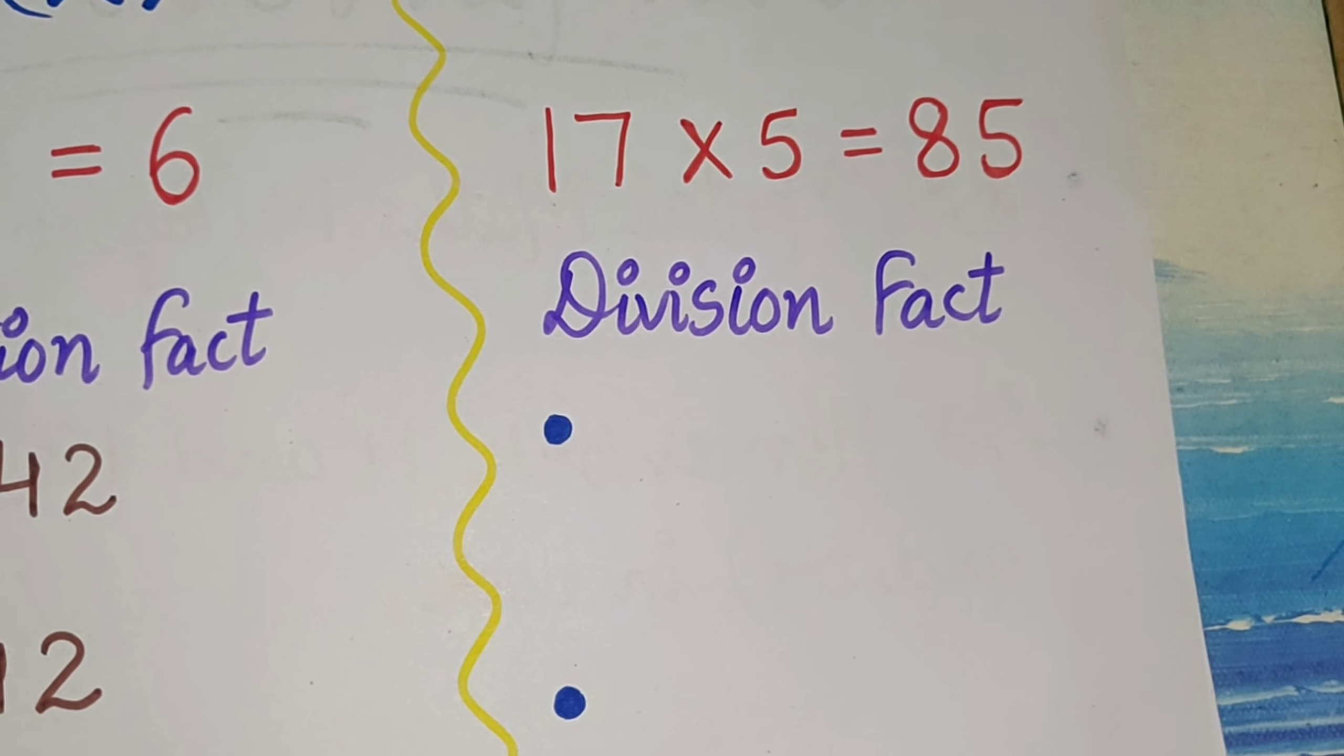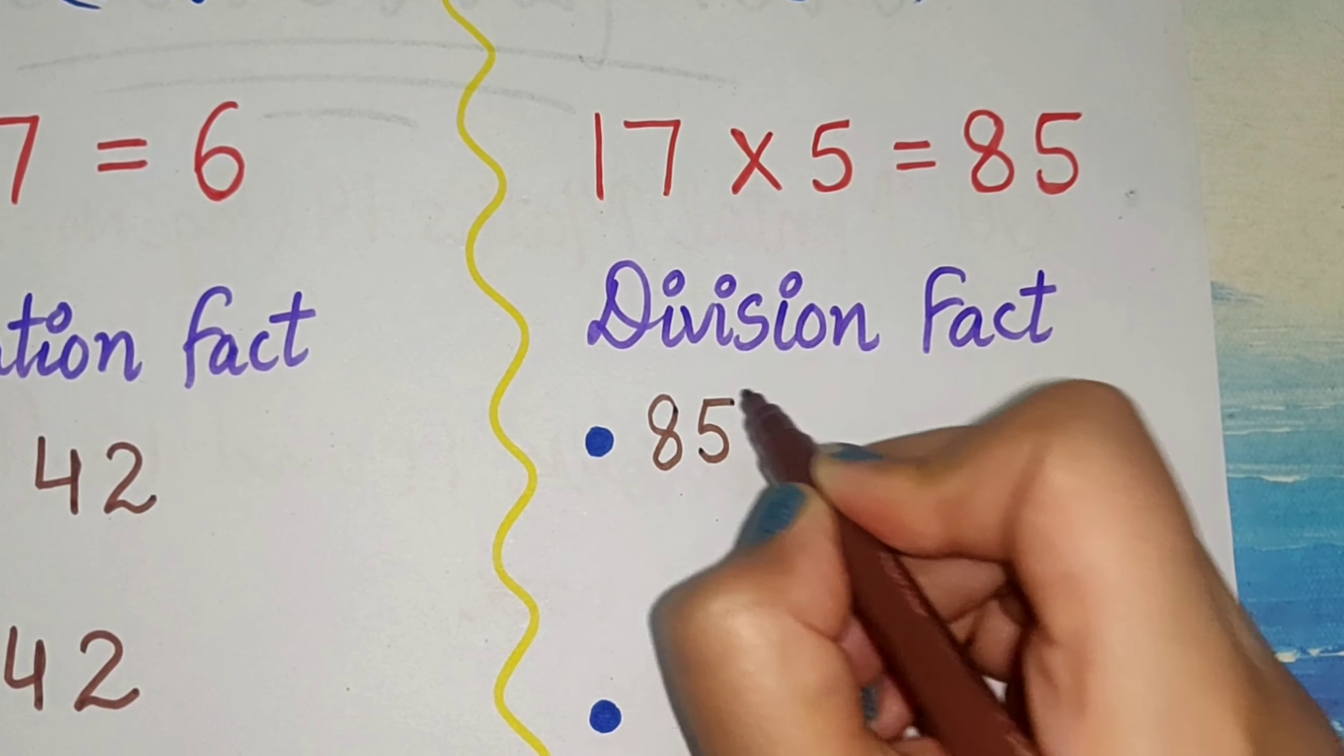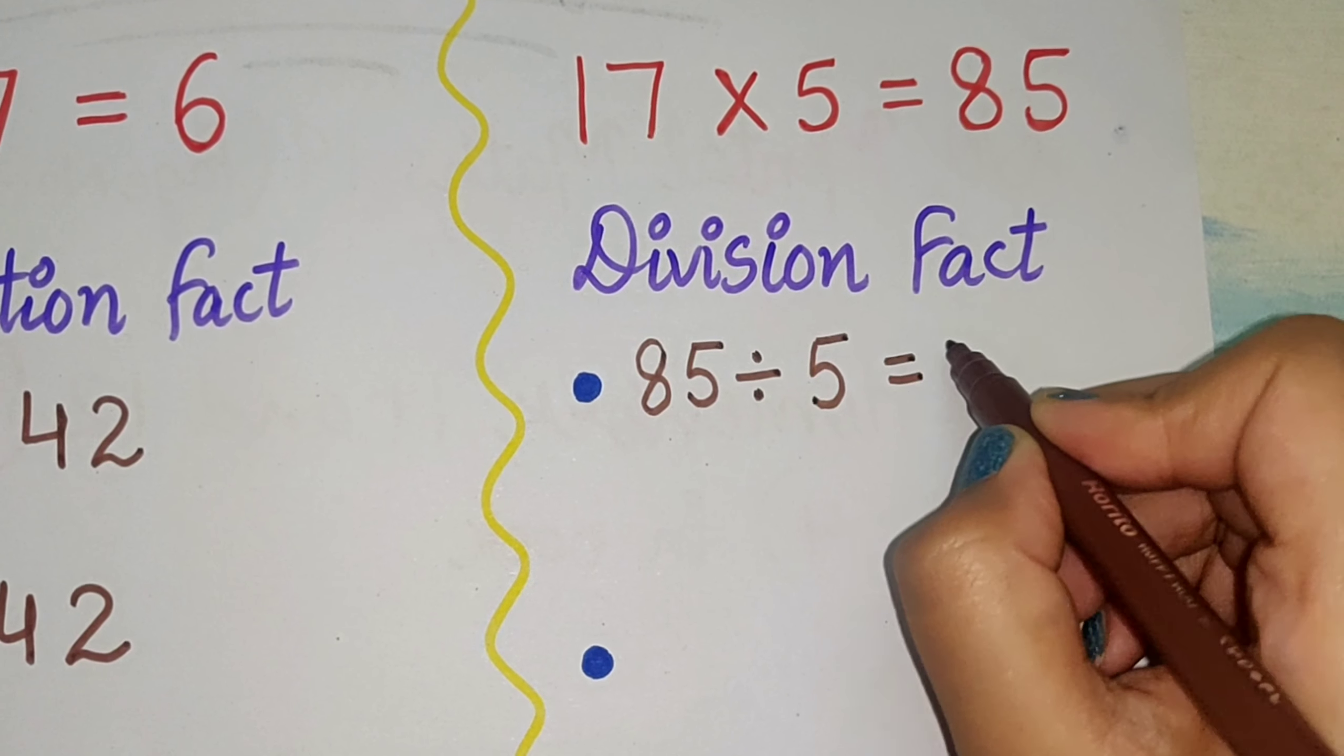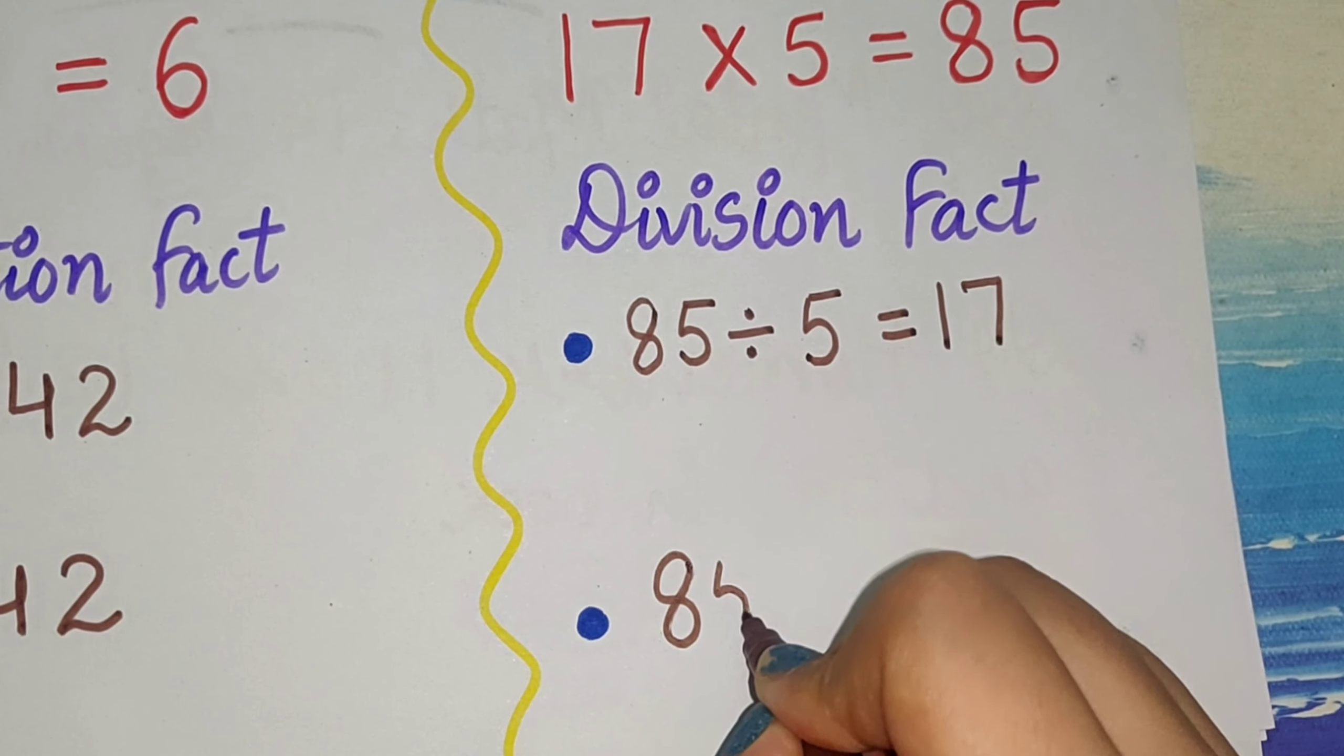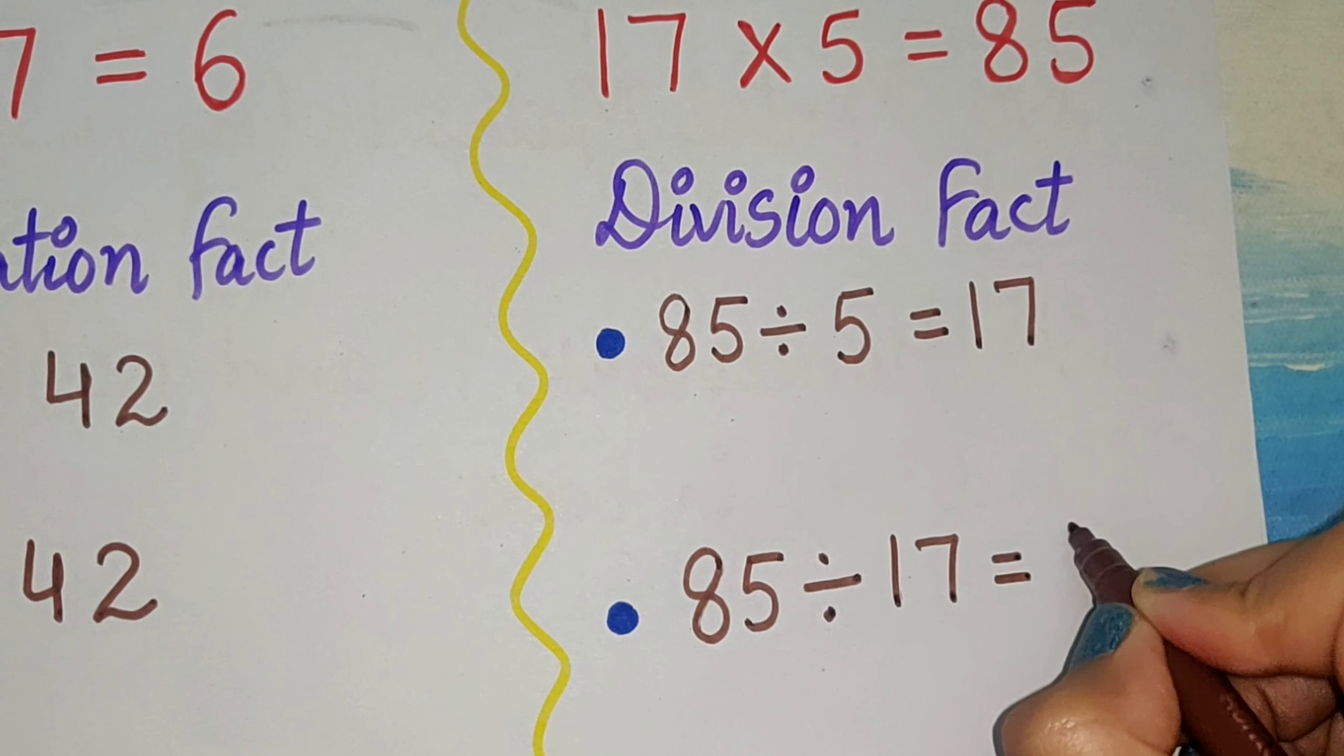Now here we will write the division fact for this multiplication fact. How will we write it? See, we just write the dividend, means the biggest number first. 85 is divided by 5 equals 17. And again we will write the biggest number, that is 85, and 85 is divided by 17 equals 5.